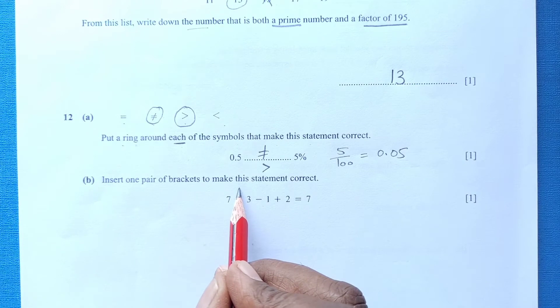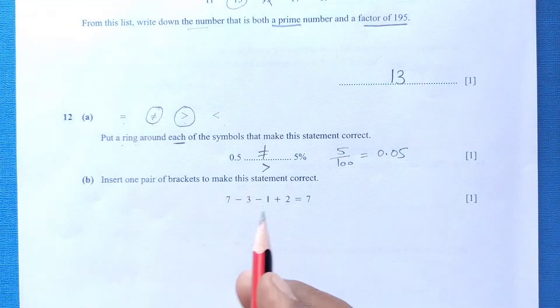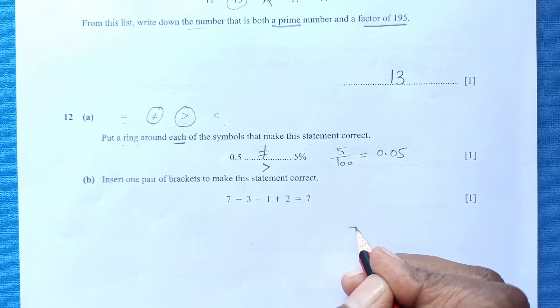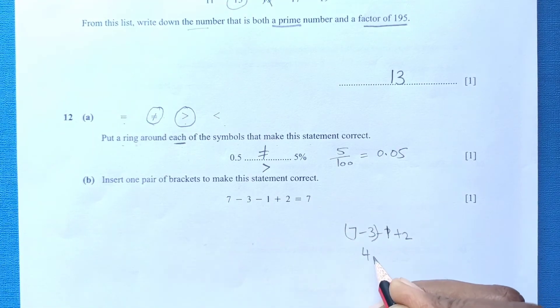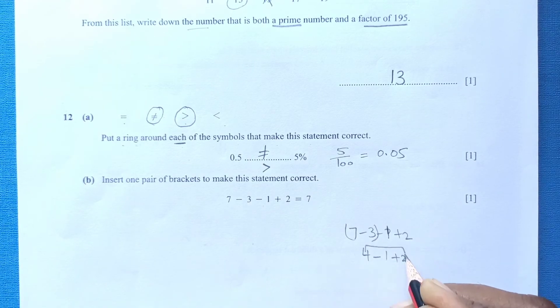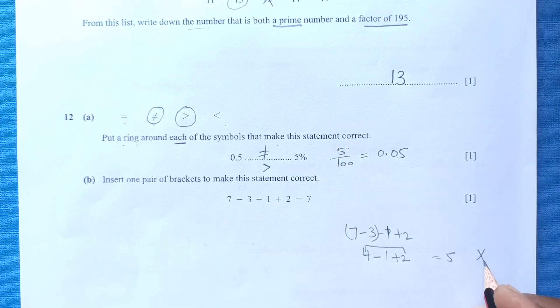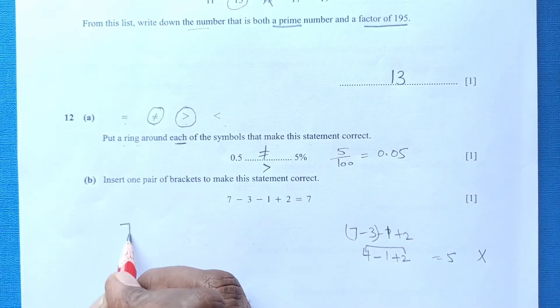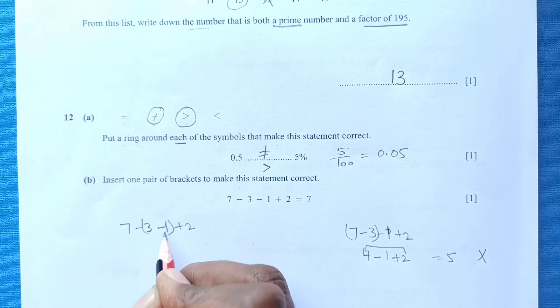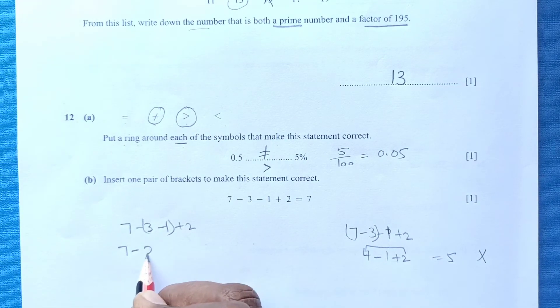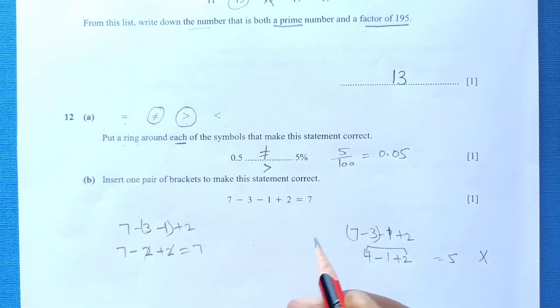Insert one bracket to make this statement correct. We can check by inserting the brackets. 7 minus 3 minus 1 plus 2. If you have 4 minus 1 plus 2, 4 plus 2, 6, it will come 5. This is not possible. Let's say we have bracket in here. Then 7 minus 3 minus 2. This 2 and 2 is gone, 7. Yes, it worked. So the answer is 7. Our bracket will go here.